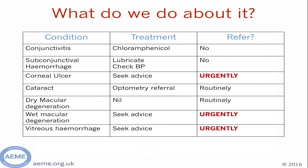Having gone through some of the findings you might pick up when doing a visual assessment, it is important to think about what we do with that information. It might be useful to take a picture of this table, which goes through some of the basic conditions and the treatment and referral process for each. If you are unsure, please don't hesitate to phone an on-call ophthalmologist to discuss.